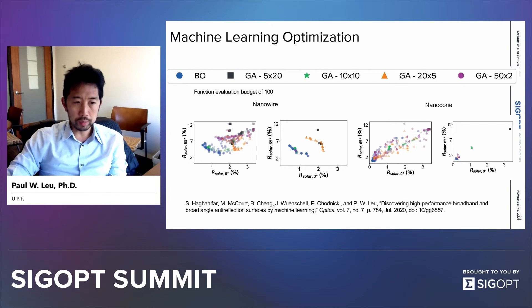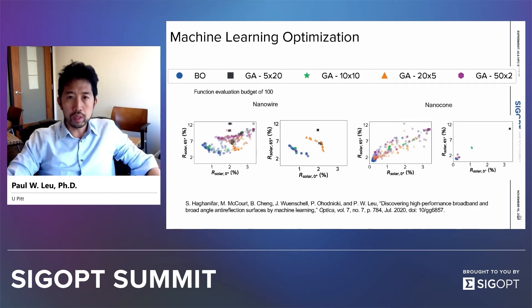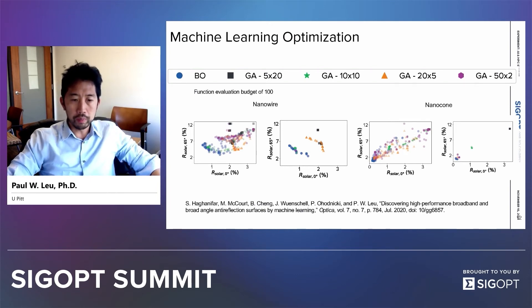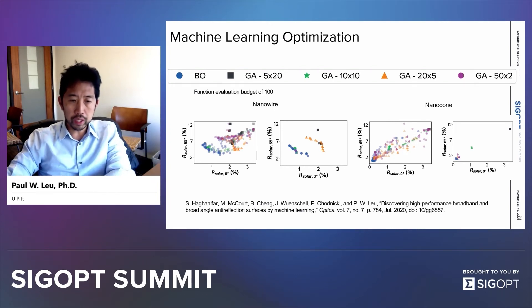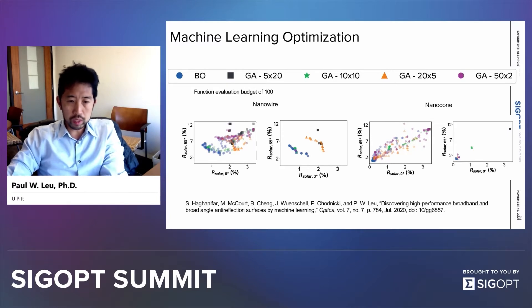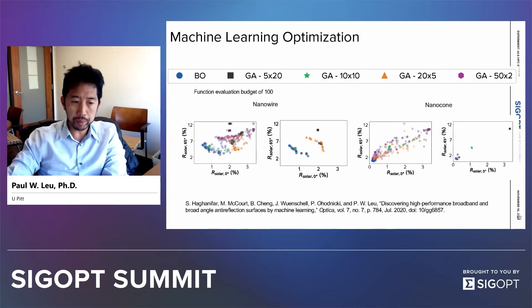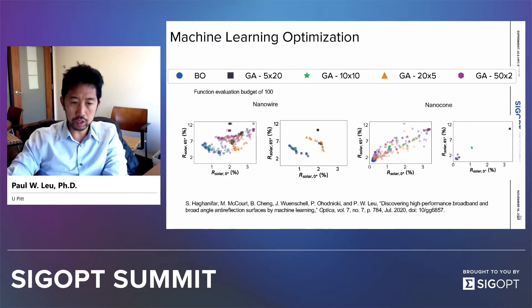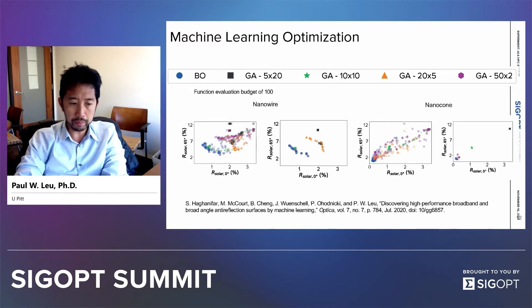To empirically demonstrate the performance of a Bayesian optimization algorithm, we compared it with the popular multi-objective optimization algorithm, which is genetic algorithms — specifically NSGA2, as found in MATLAB.